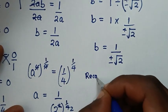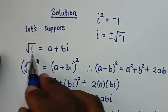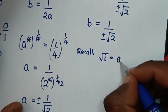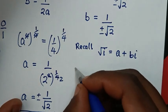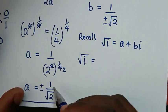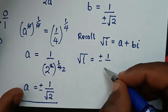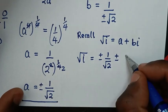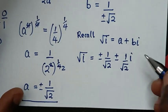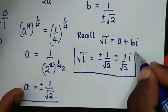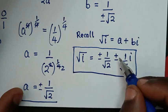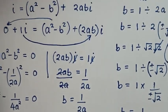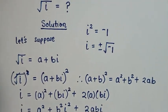We recall that we let square root of i equal to a plus bi. So, square root of i is equal to a plus bi, which gives us: plus or minus 1 over square root of 2, plus or minus (1 over square root of 2)·i. This is the final answer of square root of i. Thank you for watching. Don't forget to subscribe to my channel, and see you in the next video. Bye-bye.